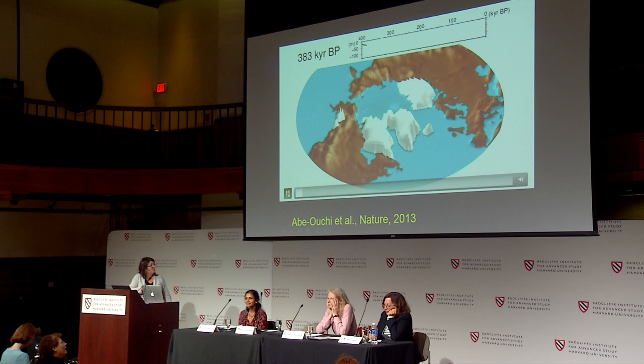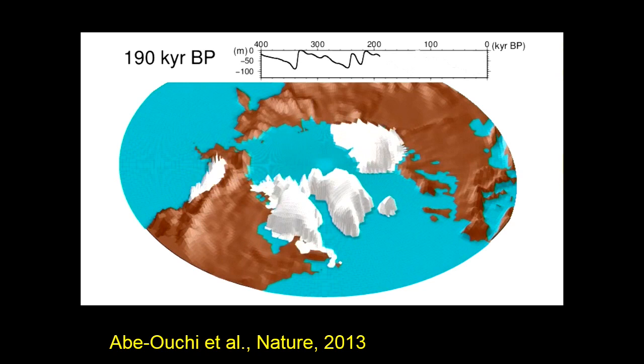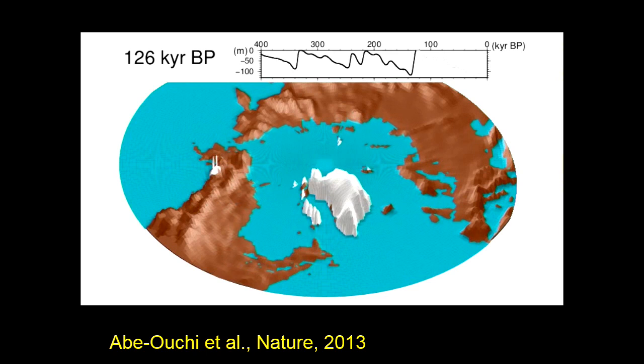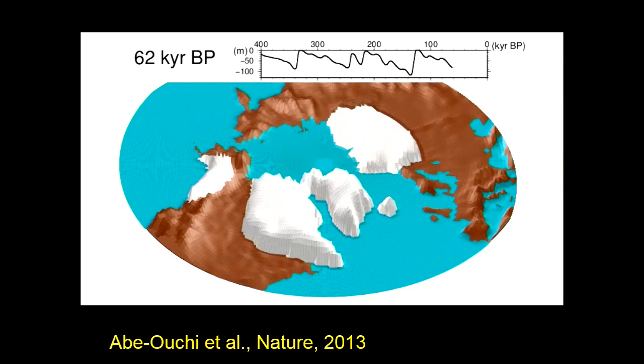This is a paper we published in Nature by Ayako Abe-Ouchi, actually the only female scientist I've ever met in my field from Japan. One thing you may notice is that ice sheets grow much slower than they melt — it's very easy to melt an ice sheet quickly. As the ice starts to retreat, the land beneath is depressed, so the ocean can flow in very quickly and destroy the ice sheet from below as well as above.